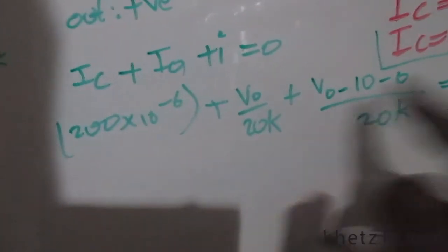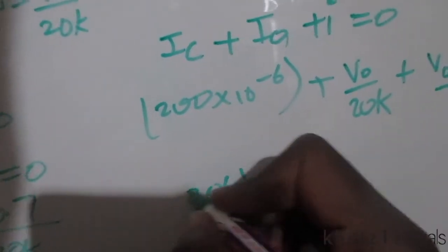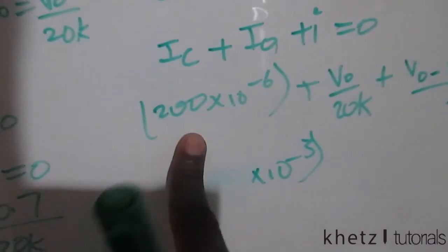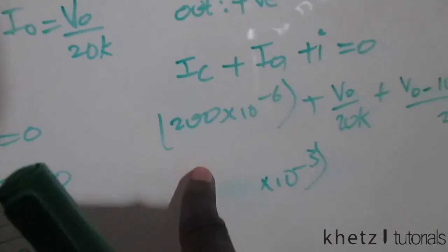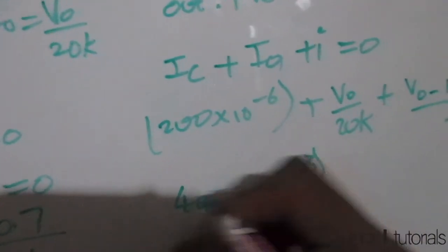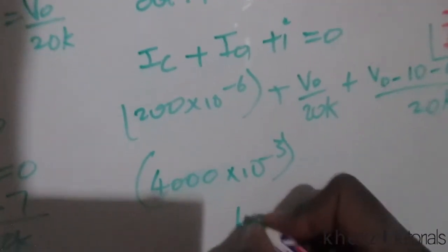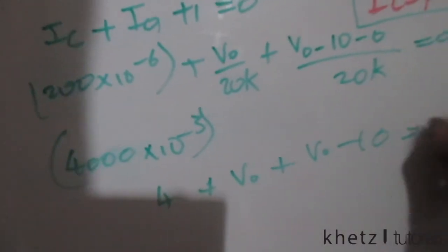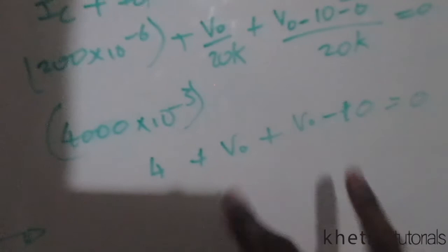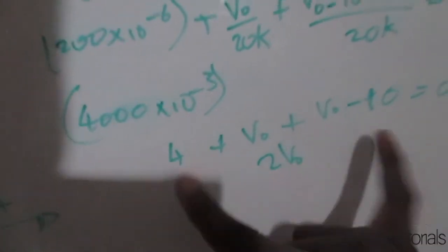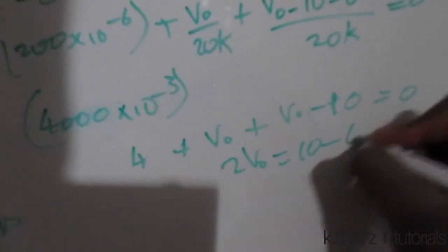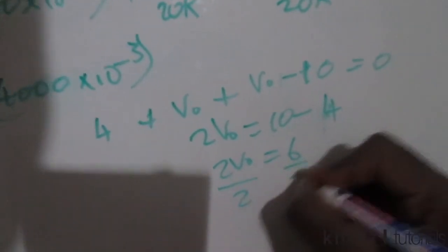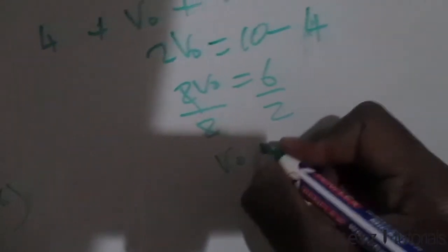Multiplying through by 20k: the 20k cancels with the 20k, giving Vo; 20 times 200µA gives 4 milliamps worth, contributing 4; and the last term becomes 2(Vo − 10). Combining: 4 + Vo + 2Vo − 20 = 0, so 3Vo = 6, giving us Vo equals 3 volts.